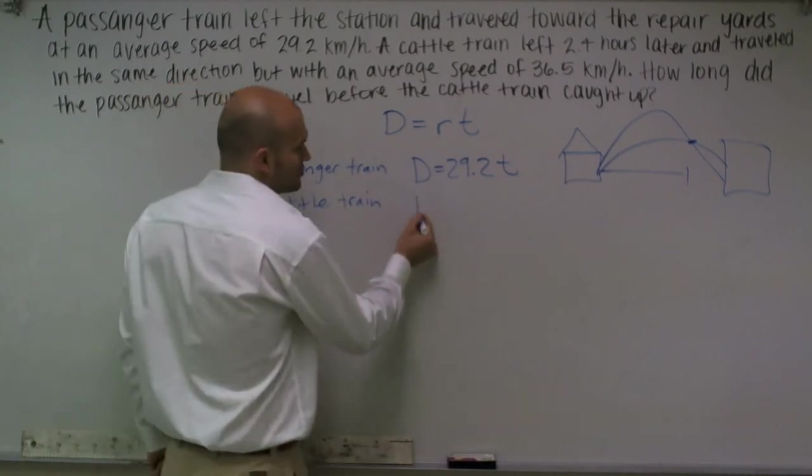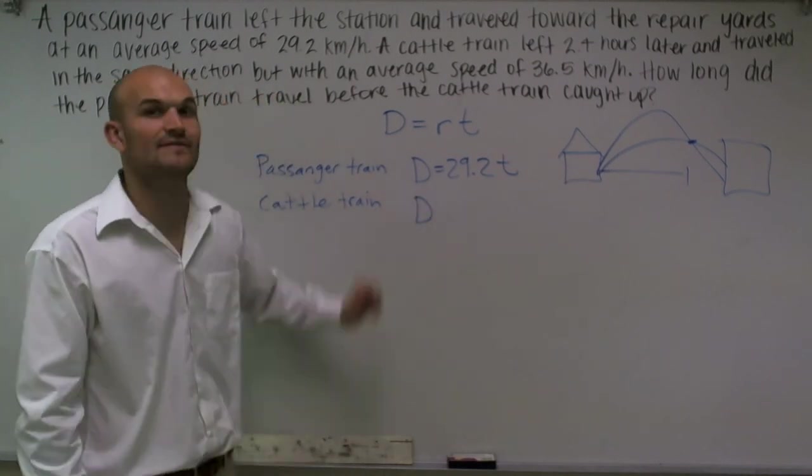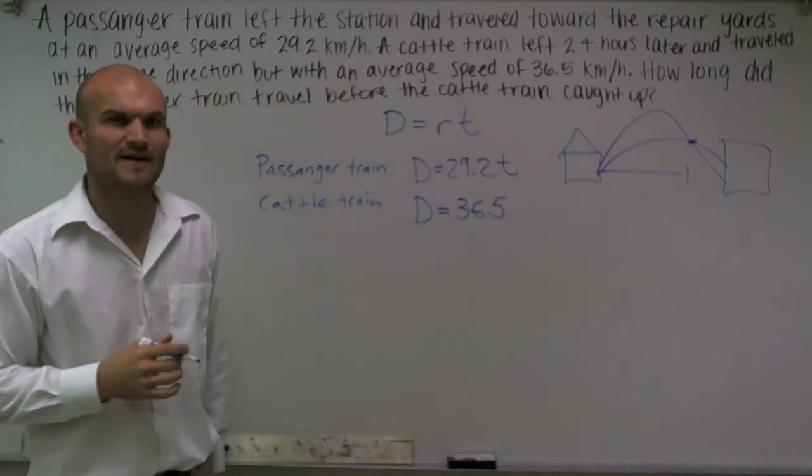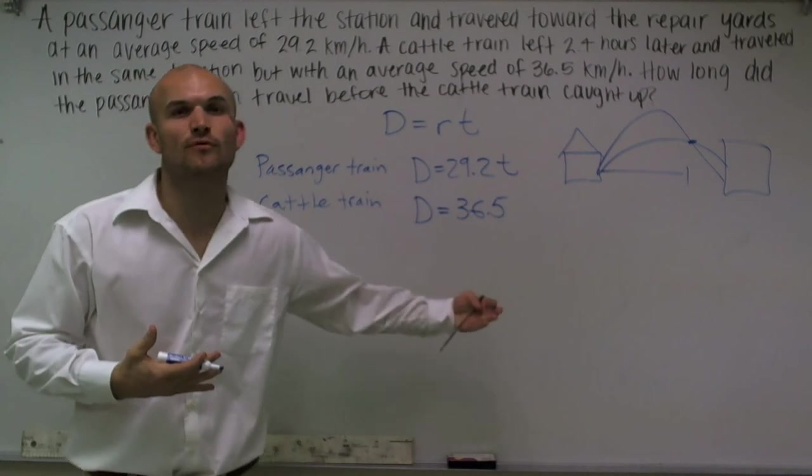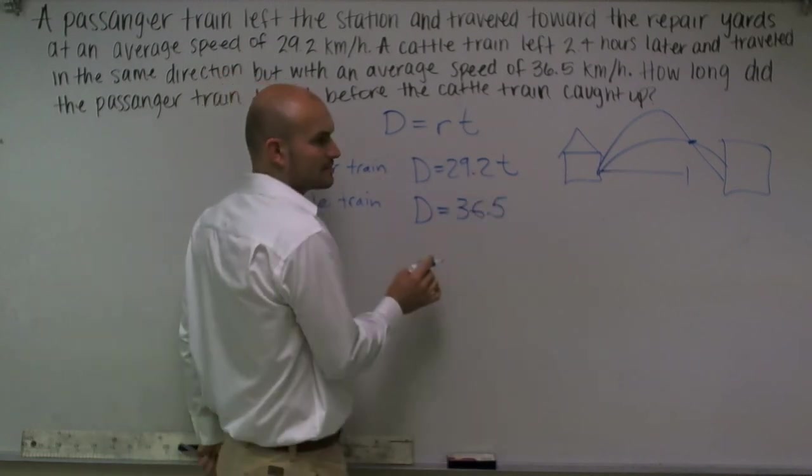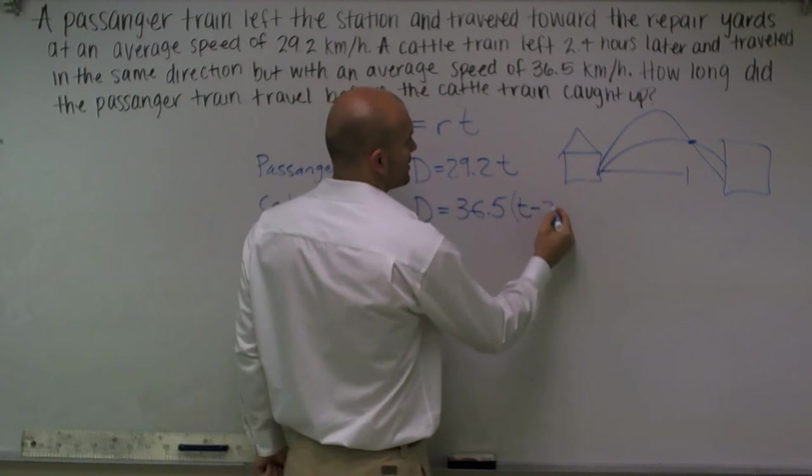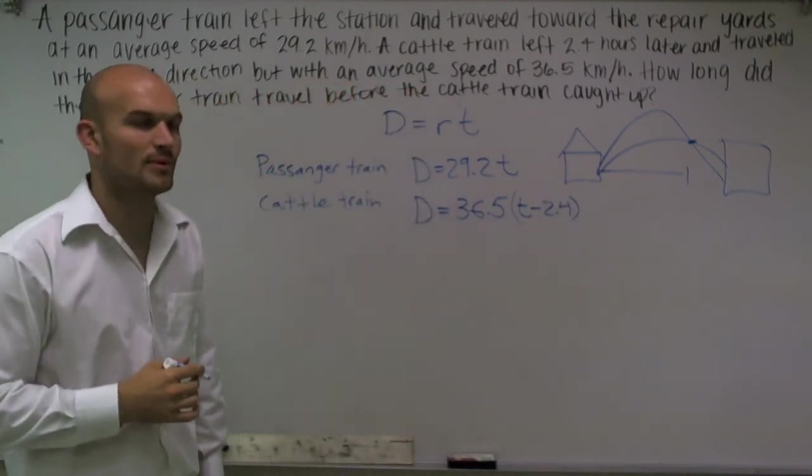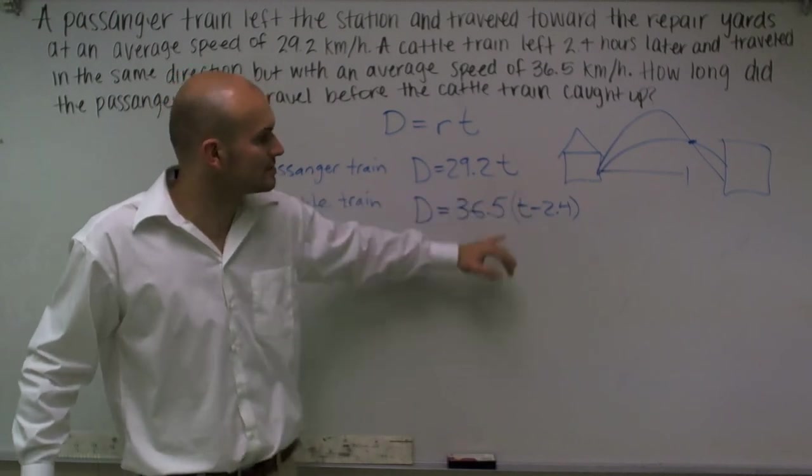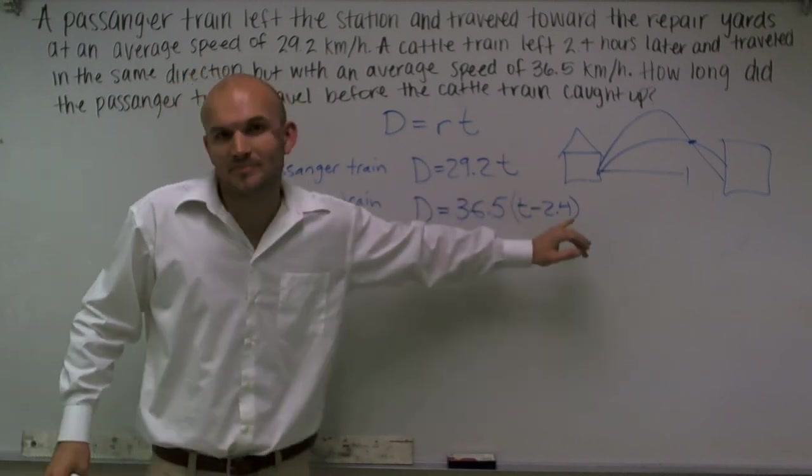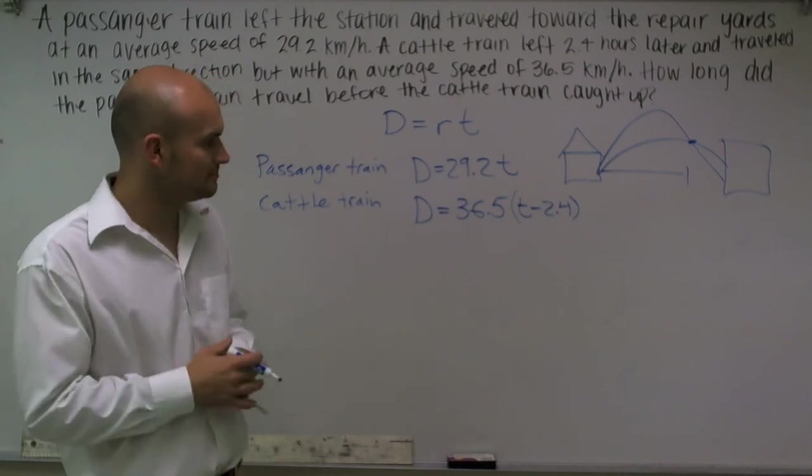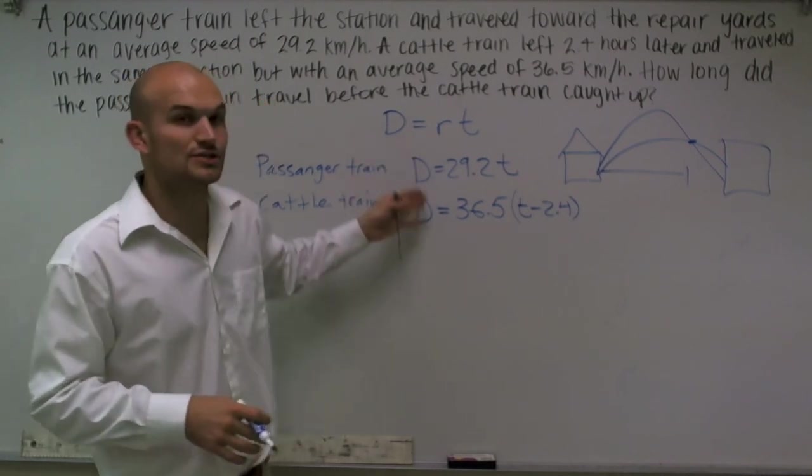The cattle train, again, traveled that same distance, but we don't know what that distance is. So we're going to leave it as D. However, now this one has a rate of 36.5 meters per second, so it's a little bit faster. And then the next thing is it says it left 2.4 hours later. So how can we algebraically represent a train leaving 2.4 hours later? Well, if the time is T, then leaving 2.4 hours later, we're going to subtract 2.4 from our time. So now I have two expressions: I have 29.2 times T and 36.5 times T minus 2.4.